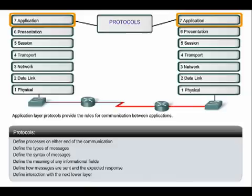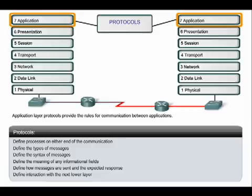Application layer protocols establish consistent rules for exchanging data between applications and services loaded on the participating devices. Within the application layer, protocols specify what messages are exchanged between the source and destination hosts, the syntax of control commands, the type and format of the data being transmitted, and the appropriate methods for error notification and recovery. The application layer protocols implemented on the source and destination host must match in order for communication to be successful.